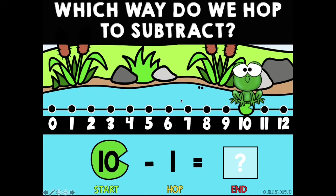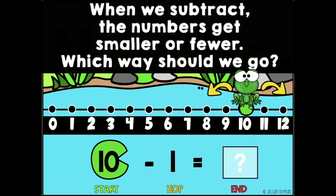Today we are going to subtract on a number line — 10 minus 1. The frog is going to help us subtract, but which way do you think he should hop? When we subtract, the numbers get smaller or fewer, so which way should the frog go? Point to the arrow that you think he should go.